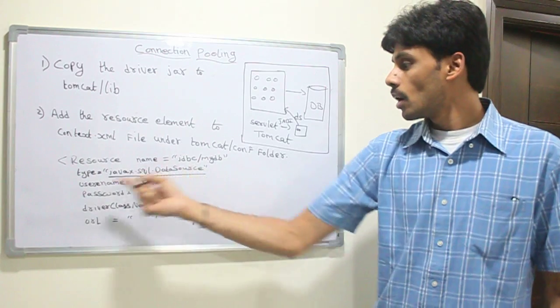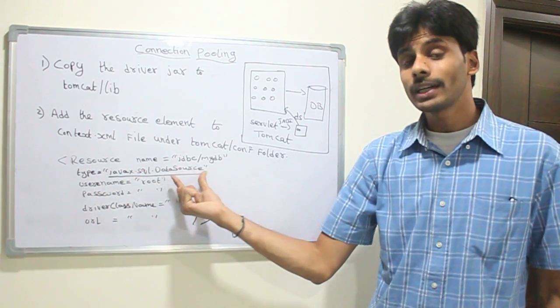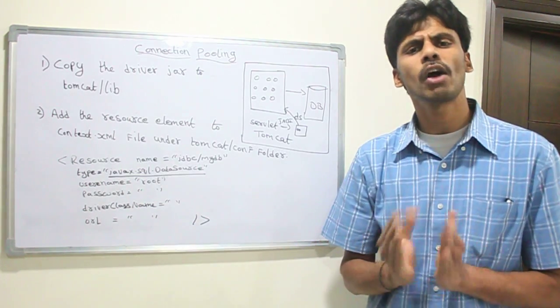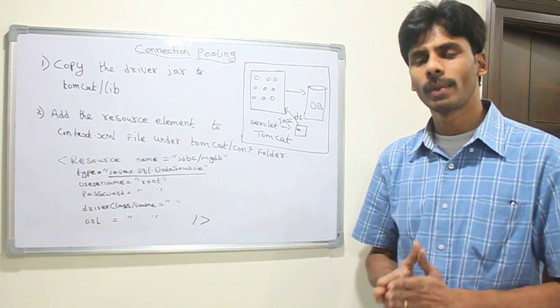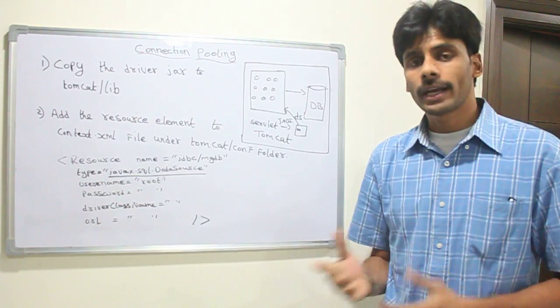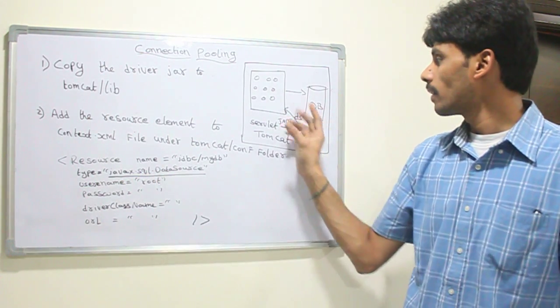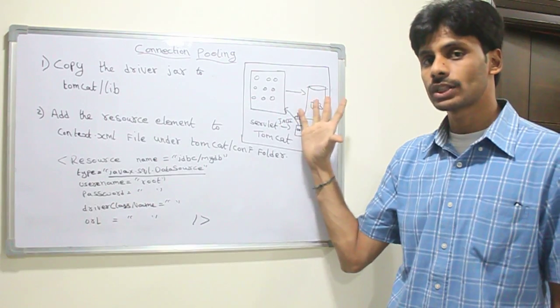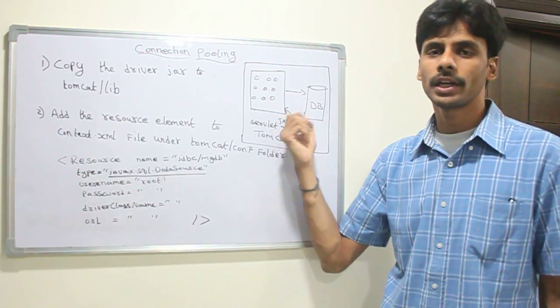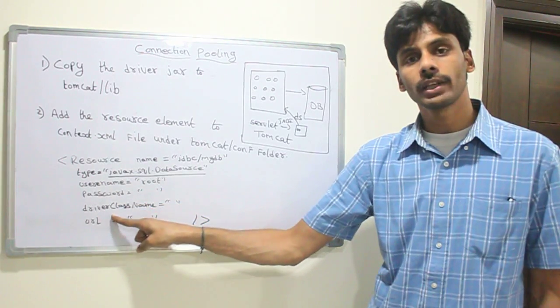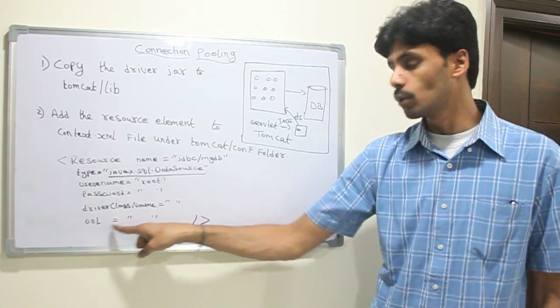So here in the resource element, you tell Tomcat what type of data source, what is the type of object you want to create. So javax.sql.datasource is a factory of connections. No matter whether you are connecting to MySQL or Oracle, javax.sql.datasource is a factory of connections. It is like a pointer to the connection pool. Then you give it the username, password to the database along with driver class name and URL.